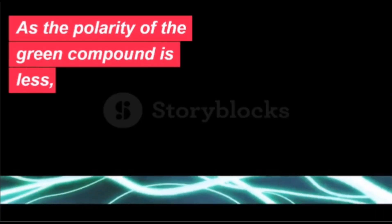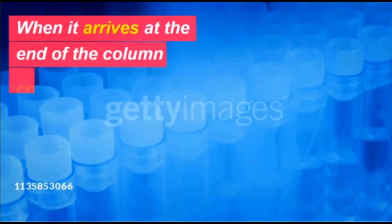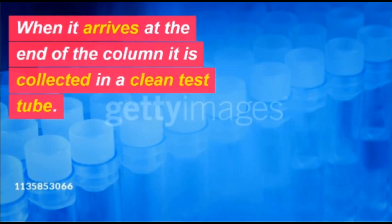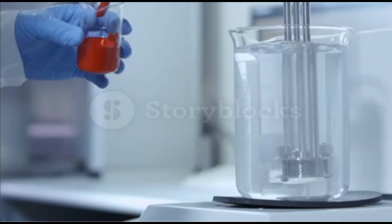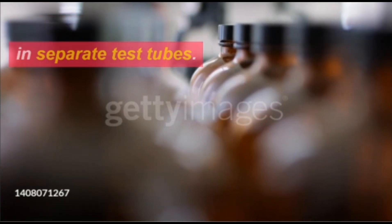As the polarity of the green compound is less, it will move first. When it arrives at the end of the column it is collected in a clean test tube. After this, the red compound is collected, and at last blue compound is collected. All these are collected in separate test tubes.